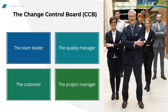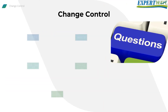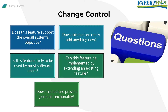Sometimes we need to add extra people to the CCB, like the developer implementing the feature, the graphic designer, or the technical writer. Key evaluation questions include: Does this feature support the overall system's objective? Does it add something new or is it simply an alternative way of doing something already supported? Is this feature likely to be used by most users? Can it be implemented by extending an existing feature rather than adding a new one? Does it provide general or very specific functionality?